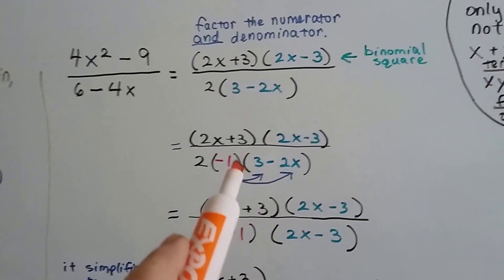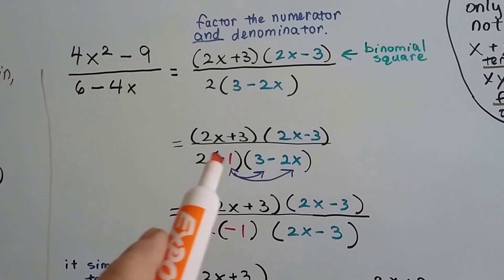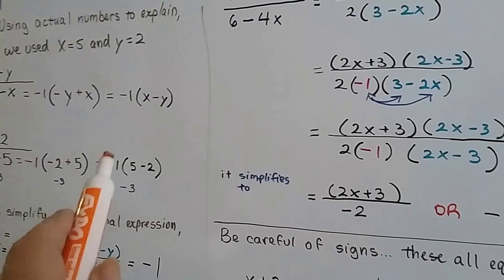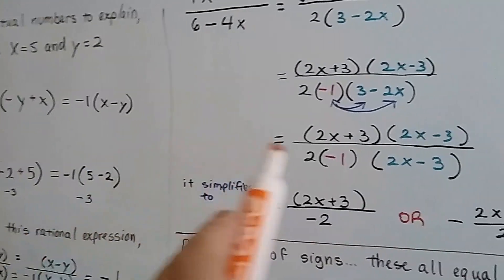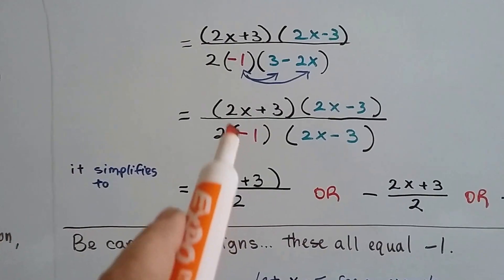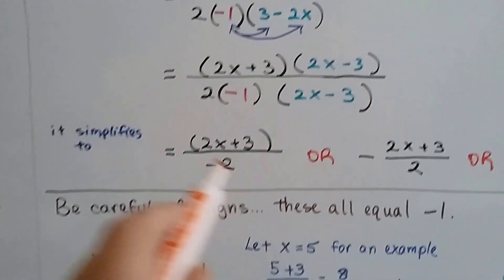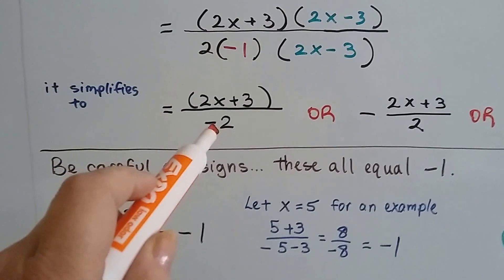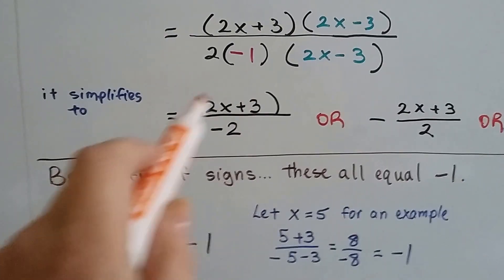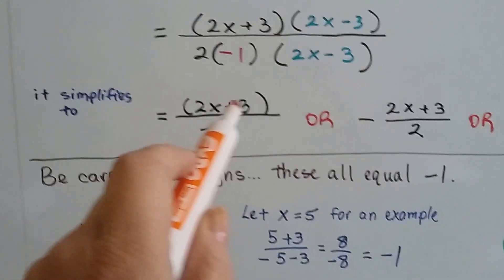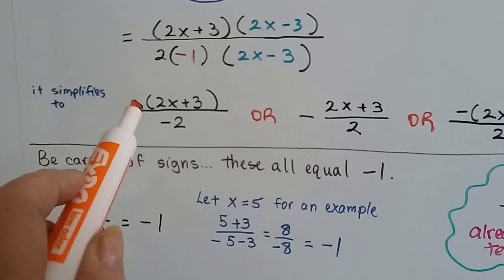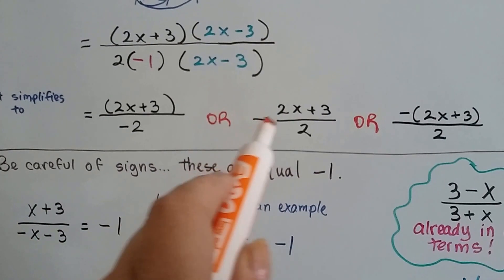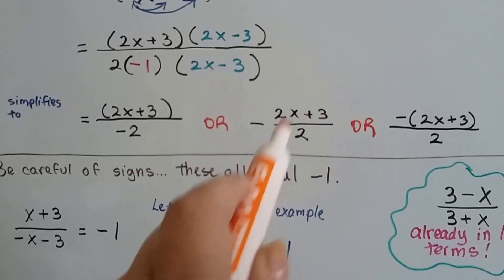By multiplying 3 minus 2x by negative 1, we can flip it around to be 2x minus 3 — just like we did in the earlier example. Now we can cancel the 2x minus 3 factors, and all we're left with is 2x plus 3 over 2 times negative 1, which is negative 2. This is simplified. Because there's a negative 2 at the bottom, it could also be written with the negative sign in front of the entire rational expression, or with the negative sign in the numerator. They're all the same thing.